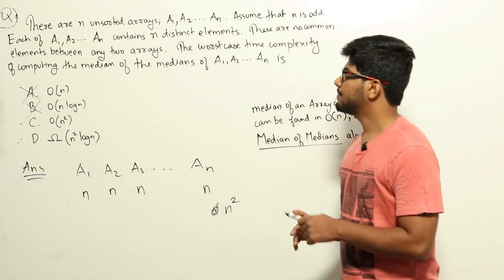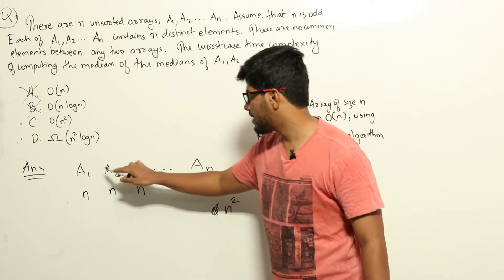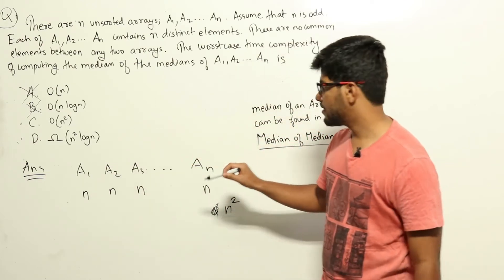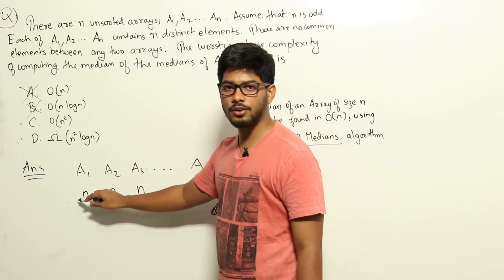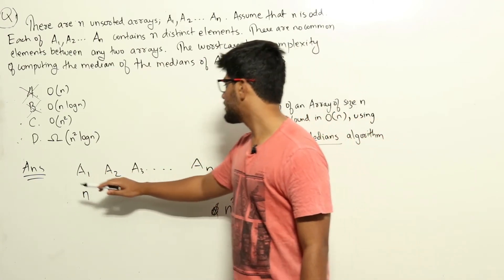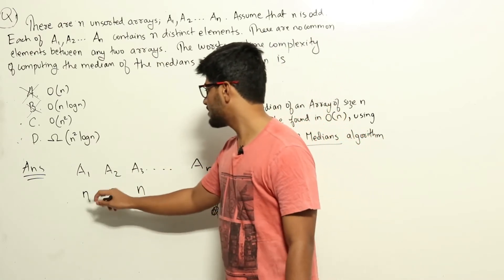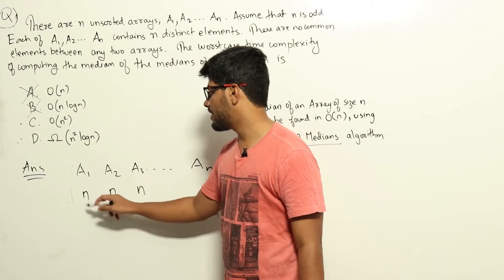Okay. So if you look at it now, if you are sorting the arrays a1, a2, a3, etc. up to an, sorting array a1 will take n log n time. So sorting n arrays of size n will take n into n log n time. In that case, see, we will sort array a1 in n log n time. After that, we will get the median.